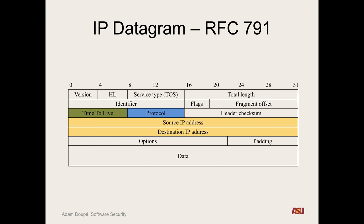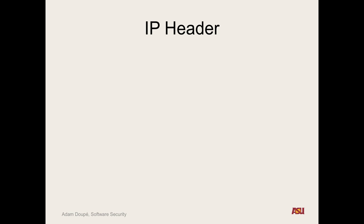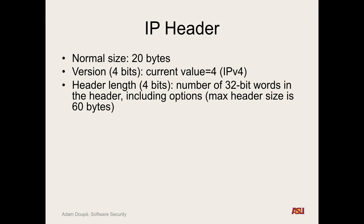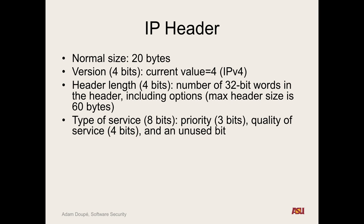So the IP header is composed of — normally it's 20 bytes if there's no options. It has a version — the version is 4 bits, 4 or 6 — we talked about that. A header length which describes the number of 32-bit words in the header, including the options.